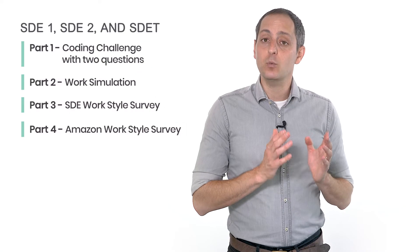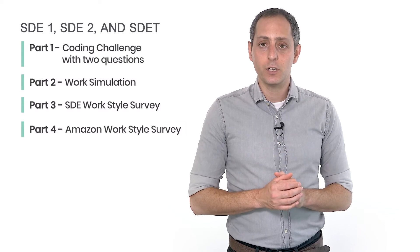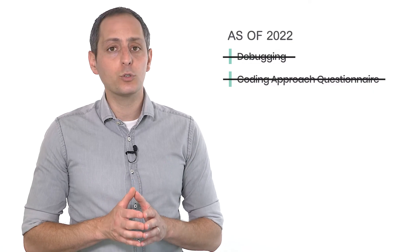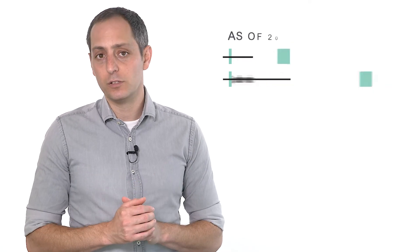Candidates for SD1, SD2, and SDET positions receive a four-part assessment that includes two coding questions, a work simulation, and two work style assessments. Note that as of 2022, Amazon removed the coding approach questionnaire and the debugging questions. Now let's go over each of the assessments section so you'll know what you're up against.